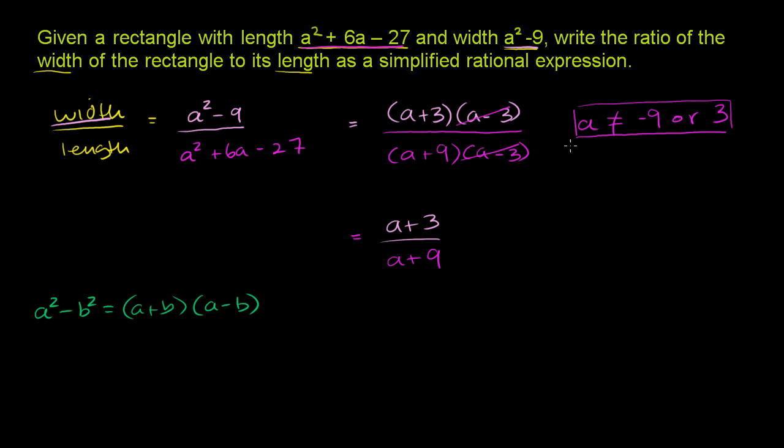The constraint here - we don't want to forget the constraints on our domain. A cannot equal negative 9 or 3. It's important that we write this because here we lost the information that a could not be equal to 3. In order for this to be the same thing as the original expression, when a was equal to 3, it wasn't defined. So we have to constrain the domain. A cannot be equal to 3.